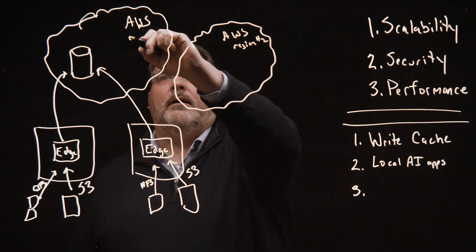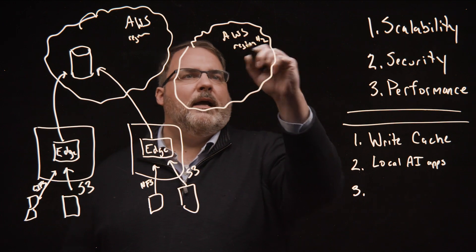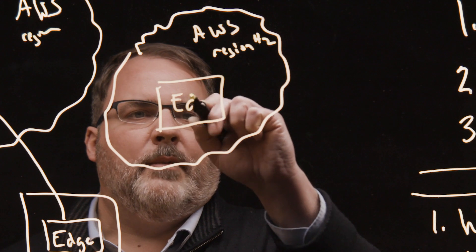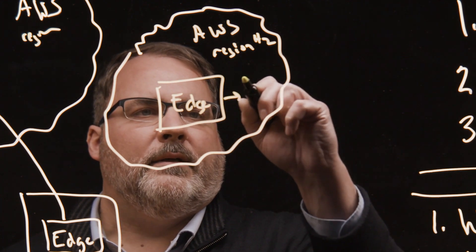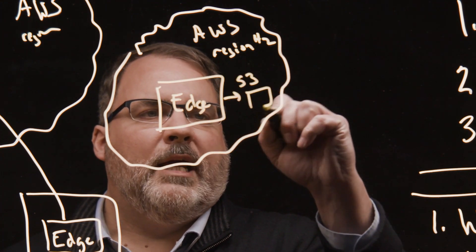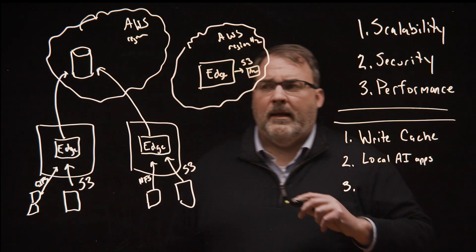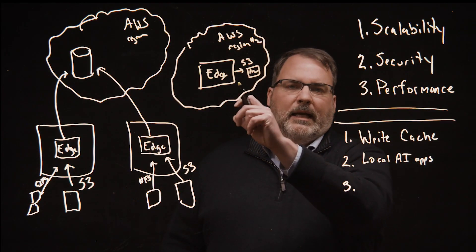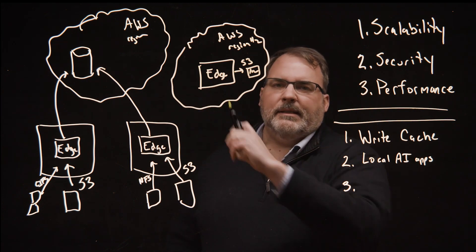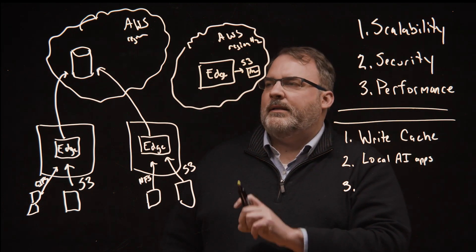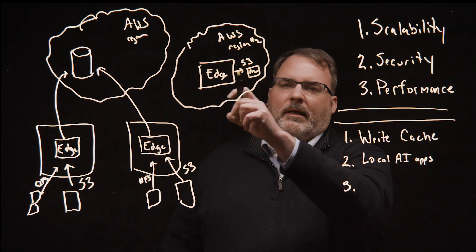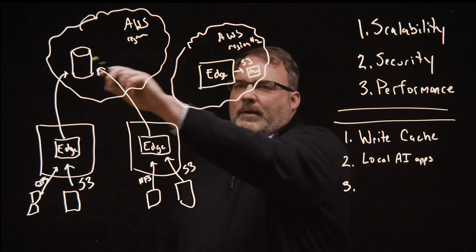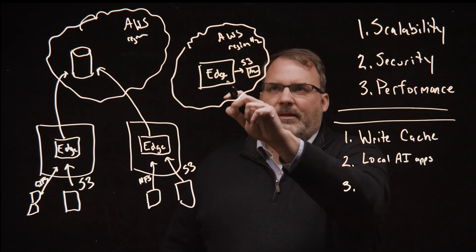What I'm going to show you here is another AWS region, let's call this a local zone. Inside that local zone, I can put my edge with S3 access to it and run my applications there. Now I have something I can't get today in Amazon. I can't get low latency access to a massively scalable S3-based file infrastructure in a local zone. Today, I have to write directly to the S3 bucket wherever it might live.